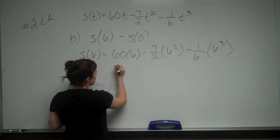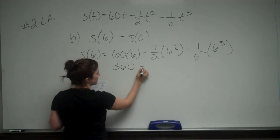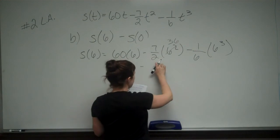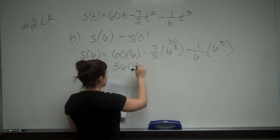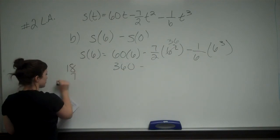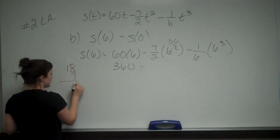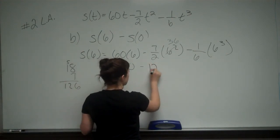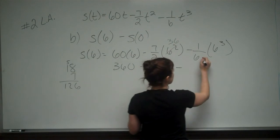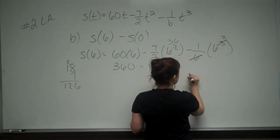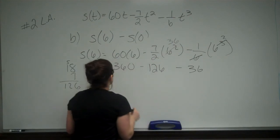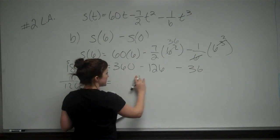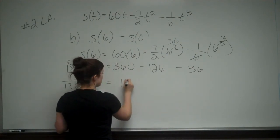So 60 times 6 is 360 minus 6 squared is 36 divided by 2 is 18. And 18 times 7, I don't know off the top of my head, so I can just do it over here. 7 times 8 is 56, that's 12, so 126, so minus 126 minus, and then this cancels with one of these, so 6 squared is just 36. So I get that S of 6 is 360 minus 126 minus 36, which is 198.